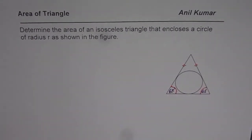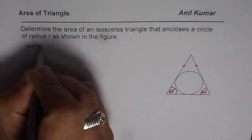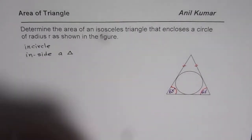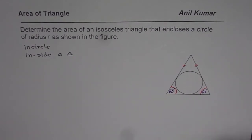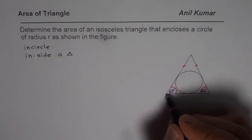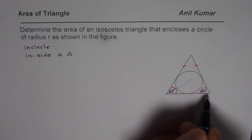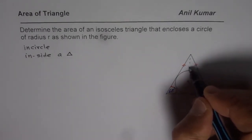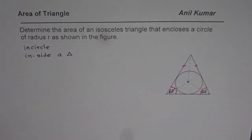We have an incircle within a particular triangle — a circle inside a triangle, perfectly fitting inside it. As you know, you can always get an incircle inscribed in any triangle. The idea is to use the bisectors of the angles at the vertices. If you have the bisectors of all three angles, they meet at a single point, and this point is used to construct a circle inside the triangle — that is how we get the incircle.